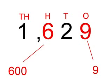Here is our first number: 1,629. Now to the place value of the 6 and the 9. The 6 represents 600 in the hundreds column, and the 9 represents 9 in the ones column.